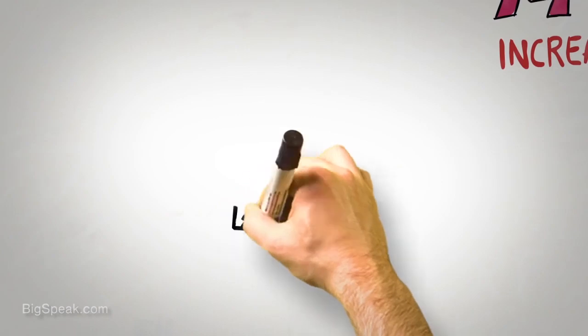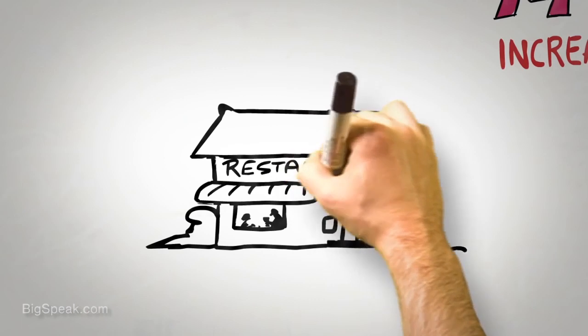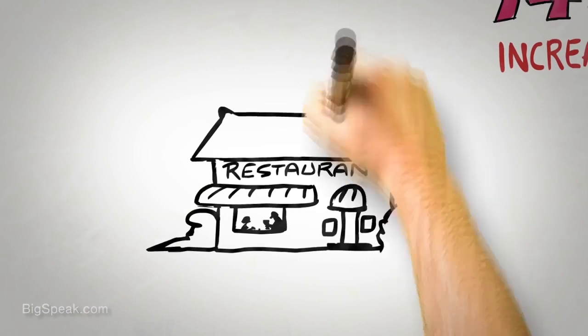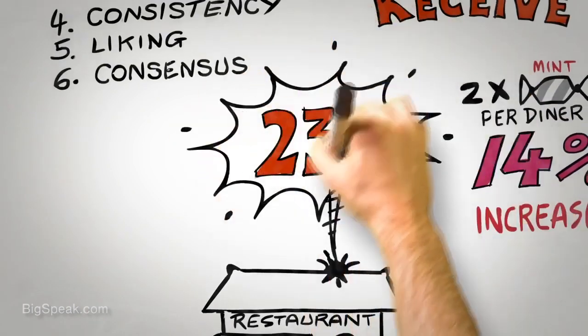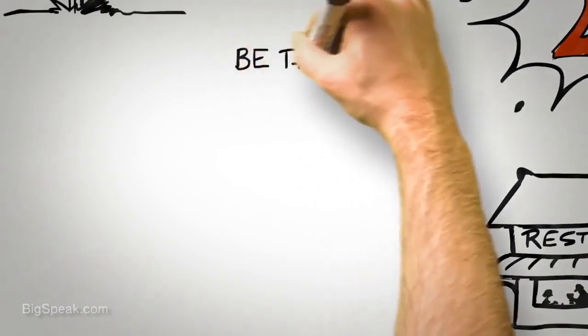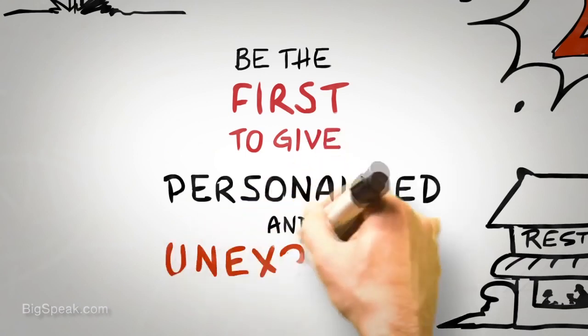But perhaps most interestingly of all is the fact that if the waiter provides one mint, starts to walk away from the table, but pauses, turns back, and says, for you nice people, here's an extra mint, tips go through the roof. A 23% increase, influenced not by what was given, but how it was given. So the key to using the principle of reciprocation is to be the first to give and to ensure that what you give is personalized and unexpected.